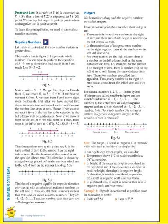Second point: in the number line of integers, every number on the right is greater than all the numbers on its left, and vice versa. So the positive numbers on the right side are greater than the numbers on the left side, which are negative.